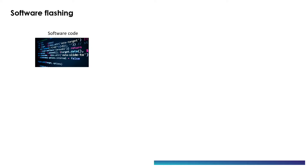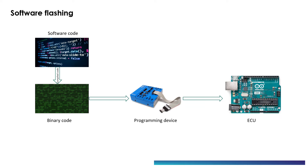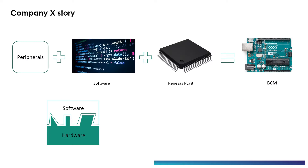Once we have a clear understanding of the system and requirements, the next step is to write the software and flash it on the ECU. The software is written in any high-level language and then compiled and linked to a binary code, which in turn is flashed into the microcontroller using a programming device.